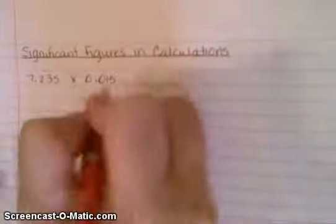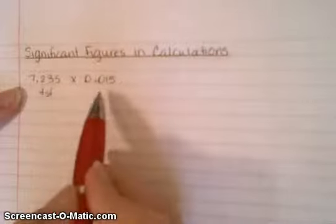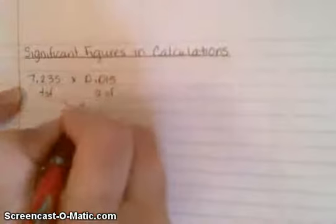First I need to figure out how many significant figures are in each number. The first one has four significant figures. The second one, leading zeros do not count, so this one only has two significant figures. Between four and two, which is the smaller number? Two is, so our answer can only have two significant figures.